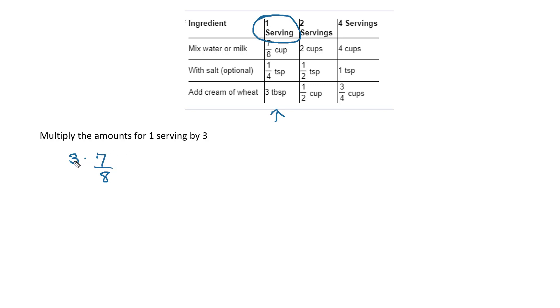When you multiply with fractions, you multiply the numerators and the denominator. Well there is no denominator. Sure there is! You can make 3 over 1, right? And so I get 21 over 8, and that's cups.